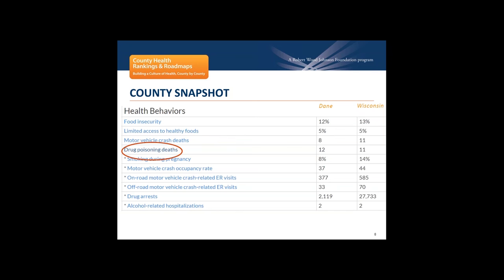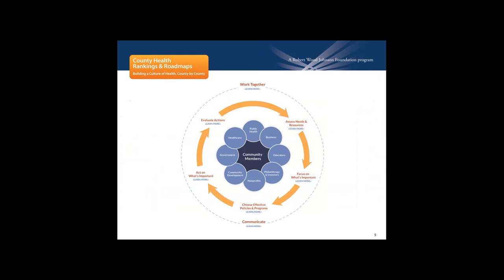You can go to countyhealthrankings.org, select your county from the map, and look under additional measures for drug poisoning deaths. Many communities need some assistance following a process to improve health. This is our take action cycle — the 'how' within County Health Rankings and Roadmaps. The process involves communities gathering information, identifying priorities, selecting strategies that are effective and evidence-informed, putting those into action, and then evaluating. Communicate and work together sit outside the cycle because working with stakeholders is essential throughout all steps.